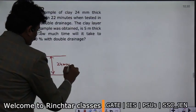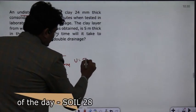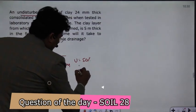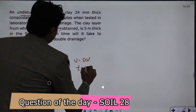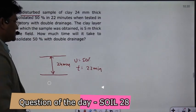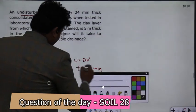And its thickness is 24 mm. In the question it is given that the degree of consolidation is 50%. Degree of consolidation is 50% and the time taken for this consolidation is equal to 22 minutes. In 22 minutes, this consolidation 50% is complete, meaning the ultimate settlement has reached 50%.